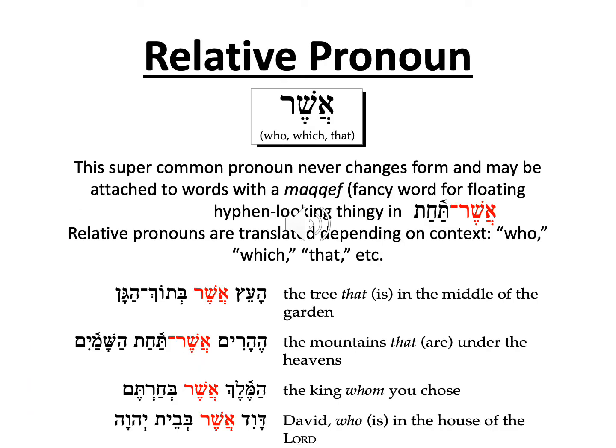In English, we have two relative pronouns: which and that. In Biblical Hebrew, we have only one — asher — which can be translated as either 'that' or 'which.' The form does not change until late Biblical Hebrew, such as the Song of Solomon or occasionally the Psalms, in which case the word is simply the shin by itself. The relative pronoun asher also does not attach to the word directly, only with a macaf — the floating hyphen looky thingy. You will get used to seeing asher throughout the Old Testament, as it is easily one of the most common words.